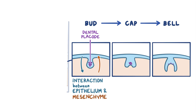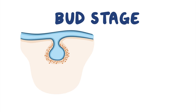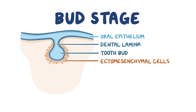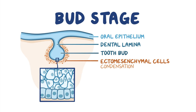During the bud stage, the dental placodes proliferate to form a bud-like structure known as the tooth bud, which is attached to the oral epithelium by the dental lamina. At this stage, the ectomesenchymal cells start to cluster around the tooth bud, resulting in a condensation of the ectomesenchyme especially right beneath the bud. The tooth bud is made up of two types of cells: an outer layer of low columnar cells and an inner bundle of polygonal cells.